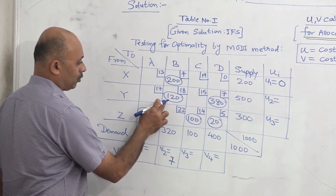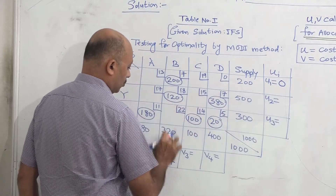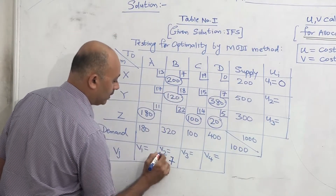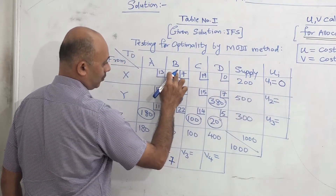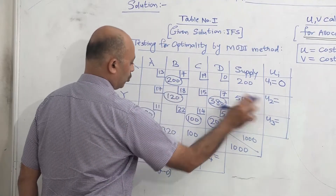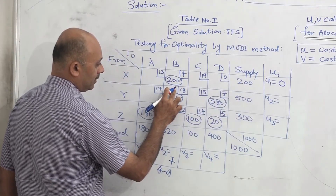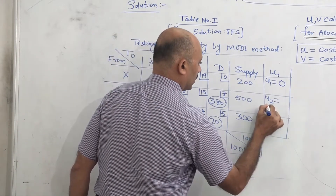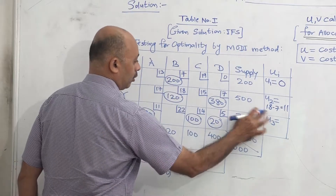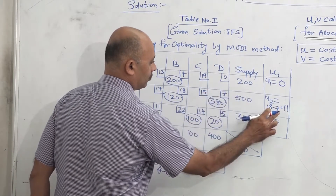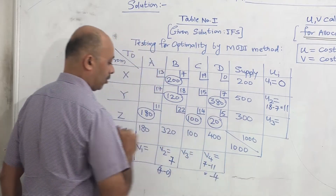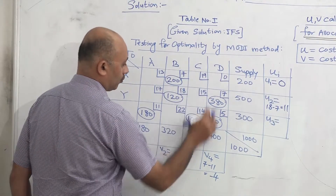From V2, go to the allocation in that column — you will get U2. Cost is 18, so U is equal to cost minus V: 18 minus 7 gives U2 equal to 11. Now using U2, come down to the next allocation. The allocation here is 380, cost is 7. V is equal to cost minus U: 7 minus 11 gives V4 equal to minus 4. Using minus 4, from this allocation you will get U3. Cost is 5, cost minus V: 5 minus (minus 4) — minus minus becomes plus — so 5 plus 4 gives U3 equal to 9.